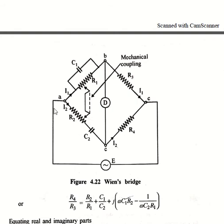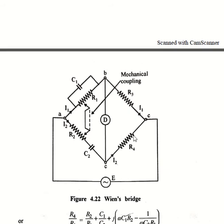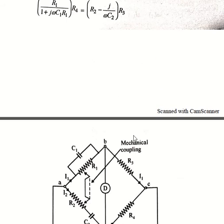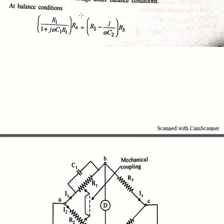First coming to the balance equation, at balance we will have Z1·Z4 = Z2·Z3. Here Z1 is a parallel combination of C1 and R1. We have taken R1/(1 + jωC1R1) multiplied by R4 equals R2 minus j/(ωC2) multiplied by R3.